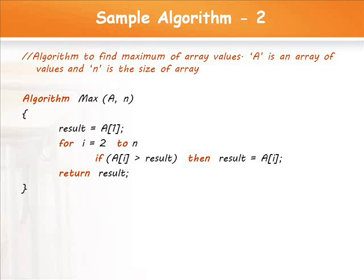Let us see the second example. How to write an algorithm to find maximum of array elements. In this case, max is the name of the algorithm, A is an array, and n is the size of the array. Initially, let me assume the maximum is stored in the result, and the maximum value is A[1].